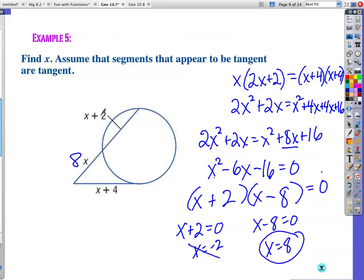Let's check. This would be 8. 8 plus 2 is 10. And then 8 plus 4 is 12. So outside times the entire length, which is 18, is that equal to 144? And how do I get 144? 12 times 12. 8 times 18, 144. So, yes. This makes me happy, and it makes you happy, too.